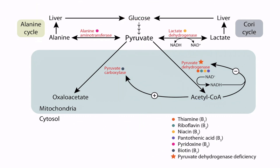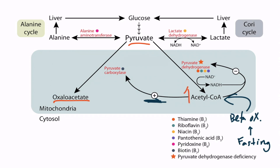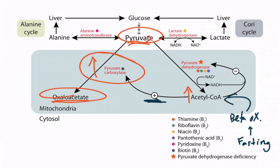Acetyl-CoA also induces pyruvate carboxylase, the enzyme that converts pyruvate to oxaloacetate, primarily in the liver as the first step in gluconeogenesis. During periods of fasting, fatty acid metabolism through beta-oxidation is upregulated, producing acetyl-CoA. When acetyl-CoA levels are high, pyruvate carboxylase can operate at maximum capacity. So a fasting patient will have increased beta-oxidation, rising acetyl-CoA levels, and increased pyruvate carboxylase activity, allowing the liver to funnel glycerol, alanine, lactate, and other substances into pyruvate, which can rapidly be converted into oxaloacetate for gluconeogenesis.